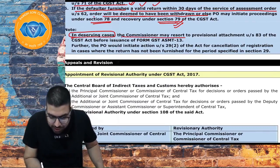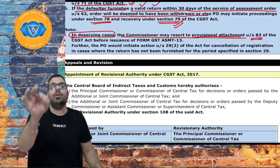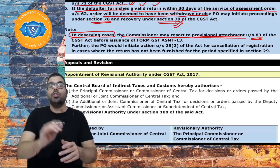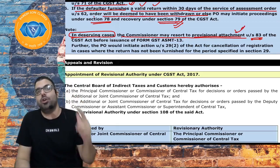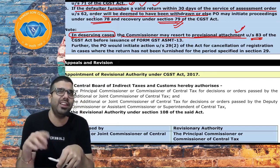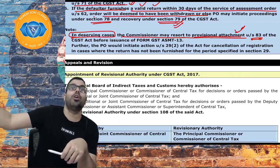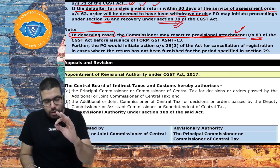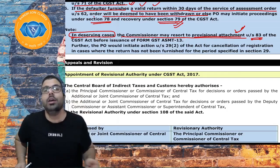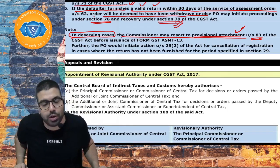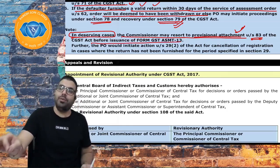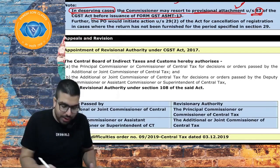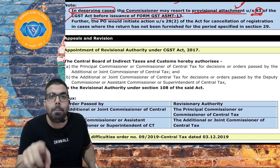In deserving cases, the Commissioner may resort to provisional attachment under section 83 — provisionally attaching your property and bank account while assessment proceedings are on. The officer issues GST DRC-22 to your bank, telling them not to allow withdrawals. This can be done before issuance of the assessment order if the officer feels you might withdraw all money or sell property.